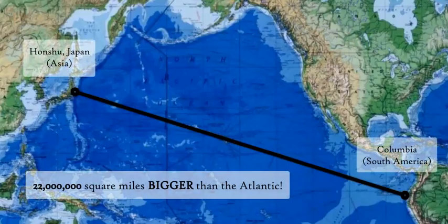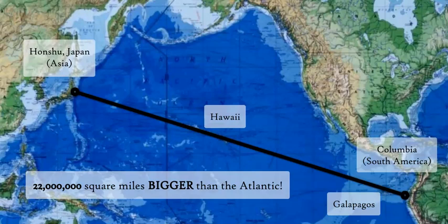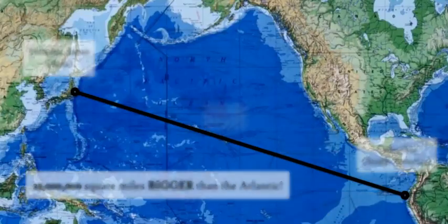For the Pacific Ocean Basin profile, looking at this map, we start on the west at the Japanese island of Honshu and go across towards the eastern part of the Pacific to the Colombian coastline. This profile should cover both Hawaii and the Galapagos Islands.